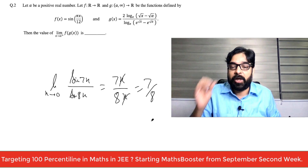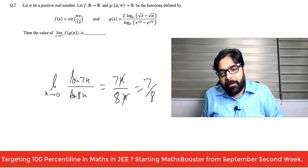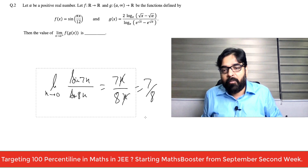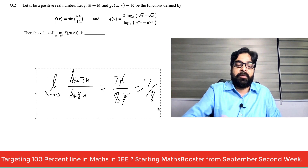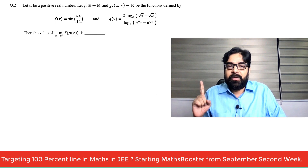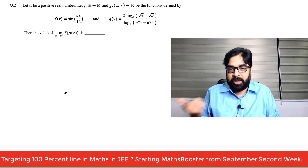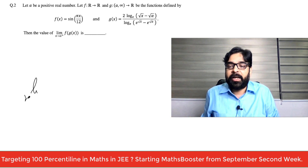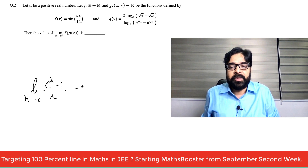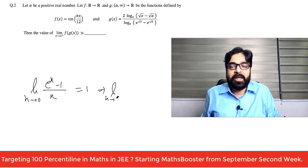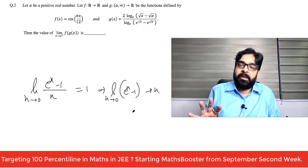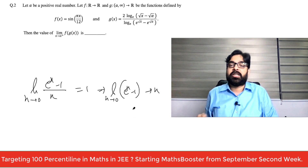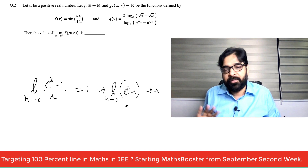One more formula used in this question: limit x→0 of (e^x − 1) / x equals 1. Learn it this way — whenever x approaches zero, e^x − 1 approaches x. So e^x − 1 can be written as x directly. This is the key approximation.